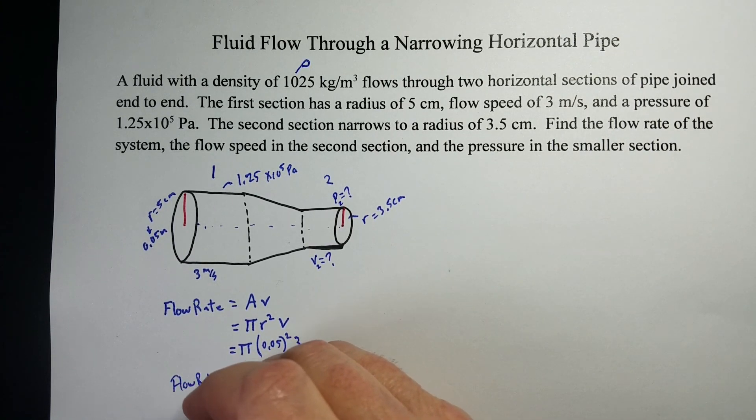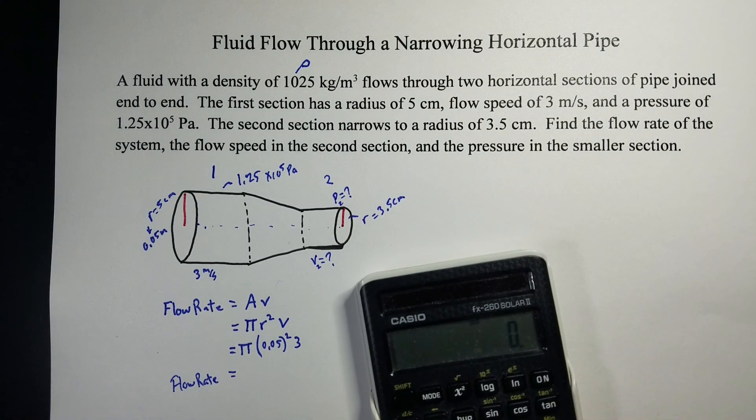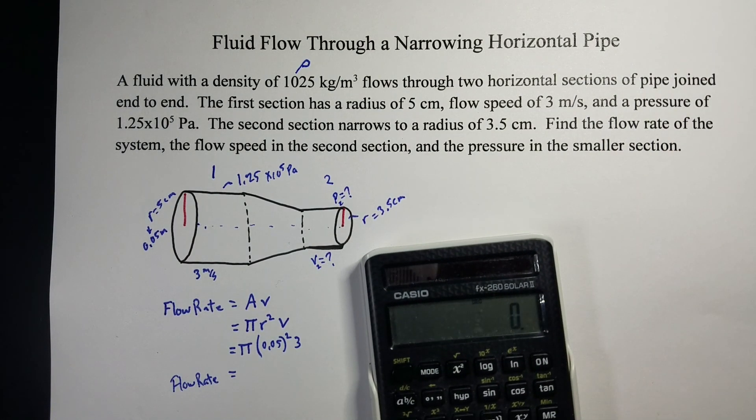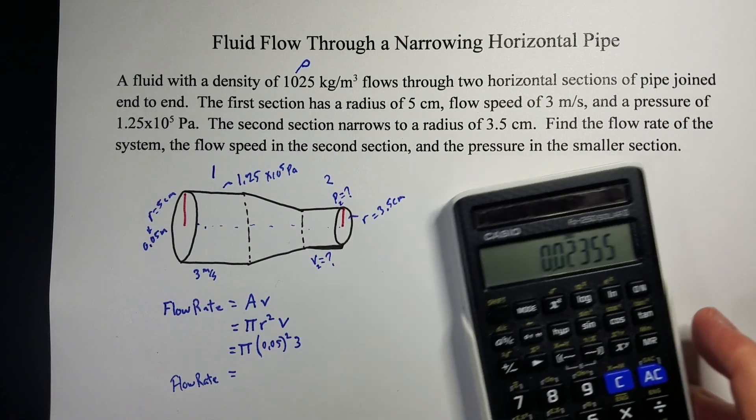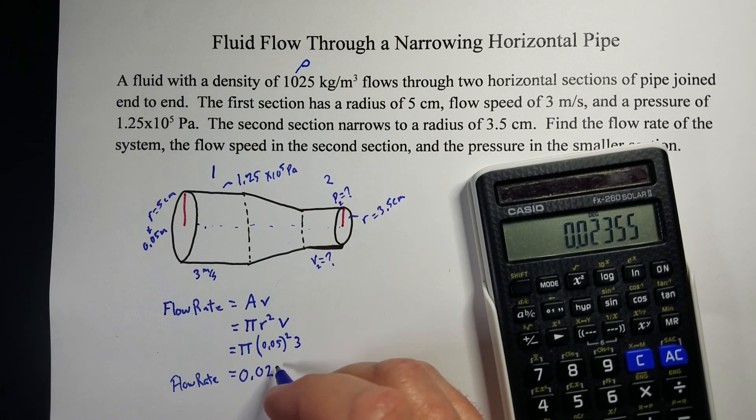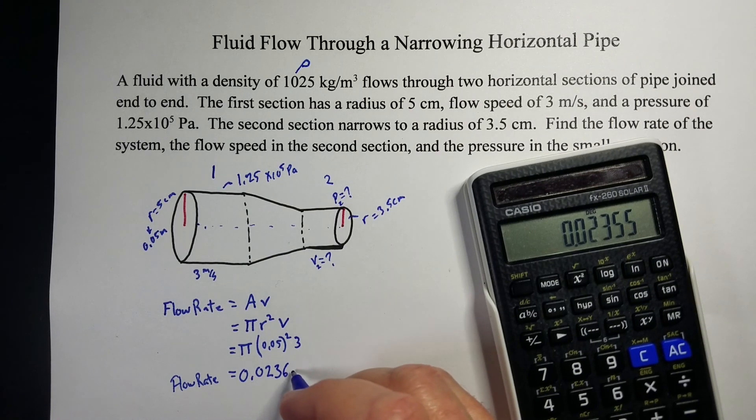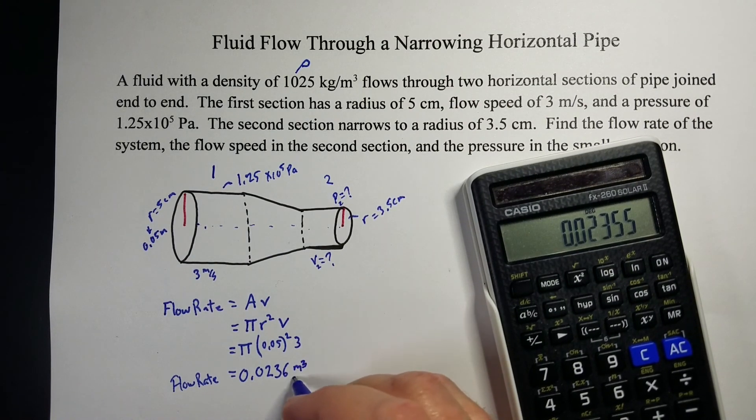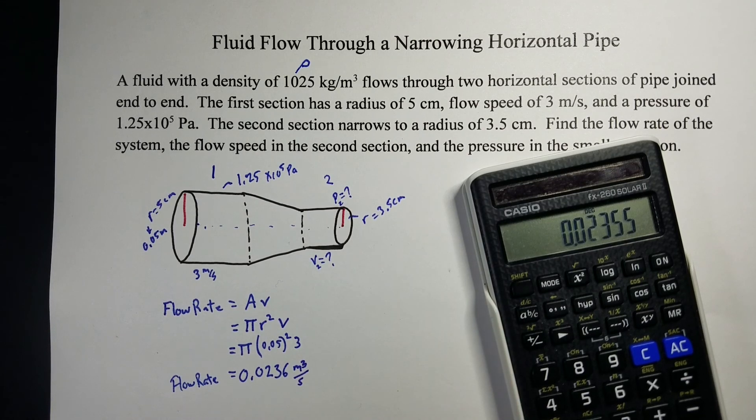So, this is a good plug-and-chug type problem. Now, I'm going to use 3.14 for pi, so 3.14 times 0.05 squared times 3, gives me a flow rate of 0.0236 meters cubed per second. And so, that's our flow rate.